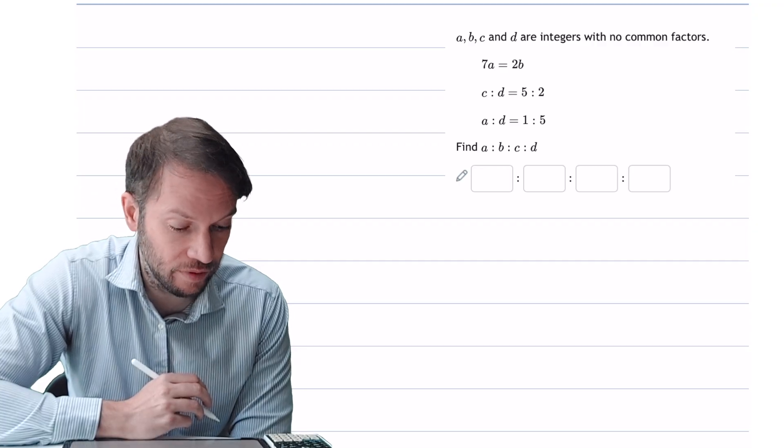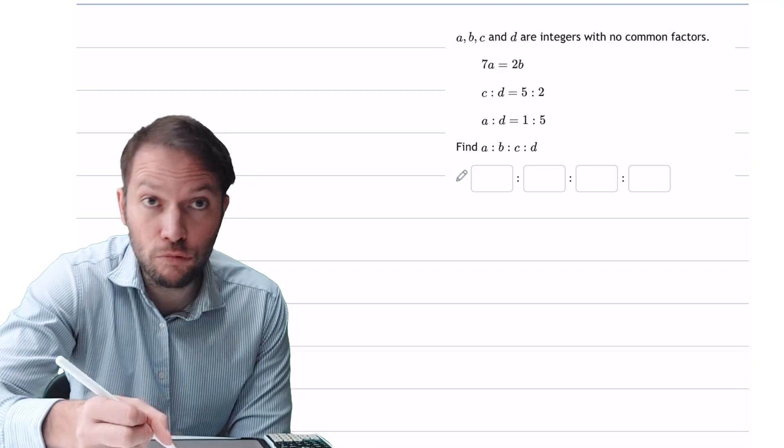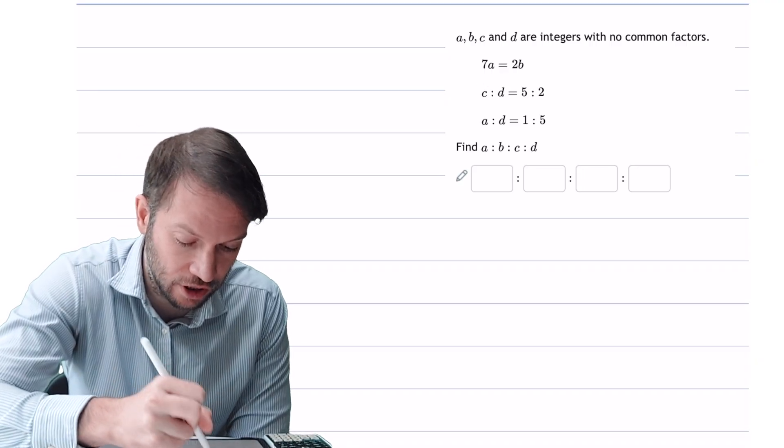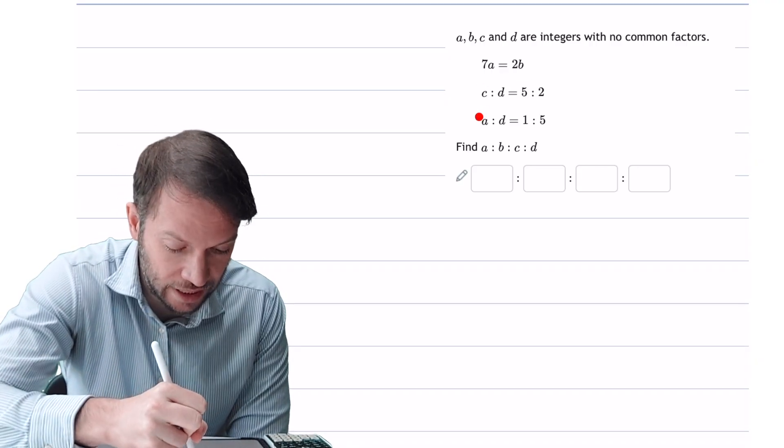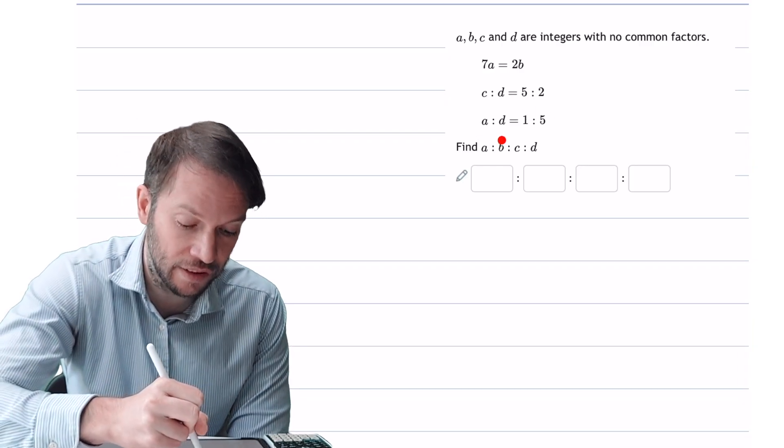a, b, c and d are integers with no common factors. We're told that 7a is equal to 2b, the ratio of c to d is 5 to 2, the ratio of a to d is 1 to 5, and we want to find the ratio of a to b to c to d.